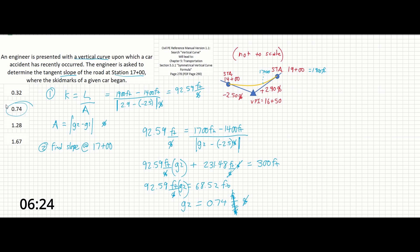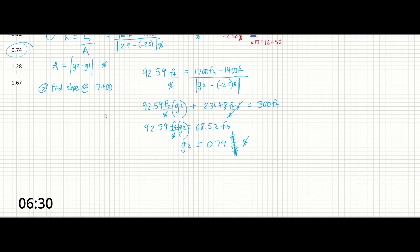So the answer to our problem is 0.74%, which corresponds to the second answer choice. There is technically a second way to solve this problem using additional information provided in the reference manual. I don't use it because it's not as explicitly called out, and it relies on knowing that the derivative of an elevation formula gives slope. But let's go through it just in case it makes more sense for some of you.